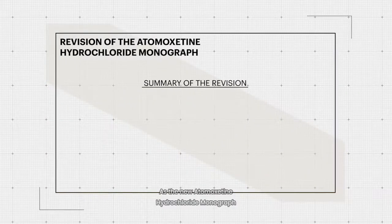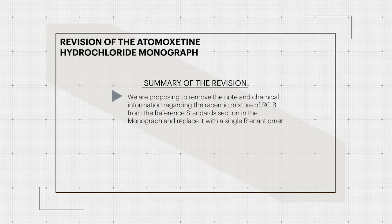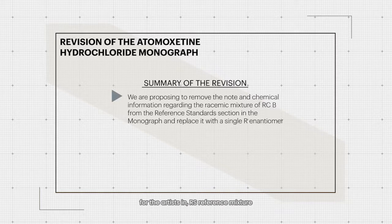As the new optically pure R-Isomer of USP Related Compound B reference standard was approved, we are proposing to remove the note and chemical information regarding the racemate mixture of RC B from the reference standard section in the monograph and replace it with the single R-Isomer. Therefore, we will delete the chemical information for the RS racemate mixture and replace it with the R-Isomer chemical name.